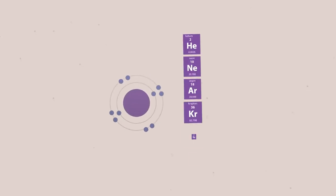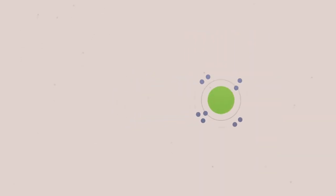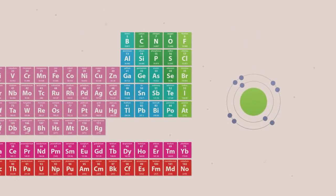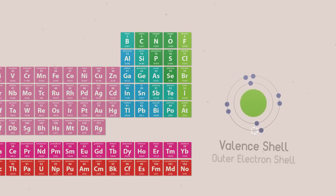Only the noble gases exist naturally as single atoms. All the other elements of the periodic table have partially filled valence shells, or outer electron shells.